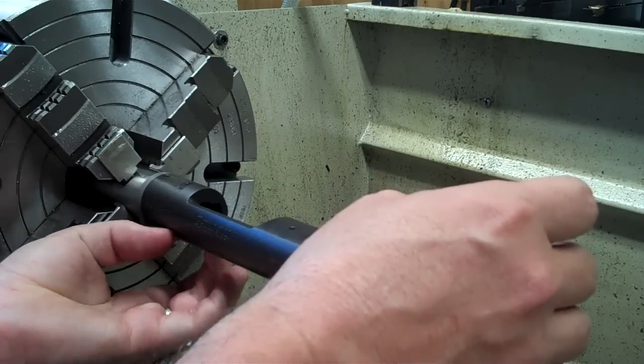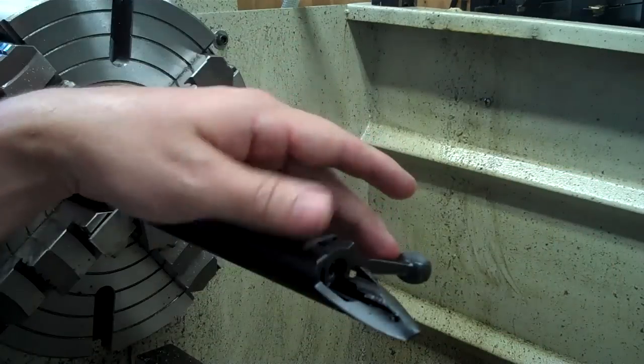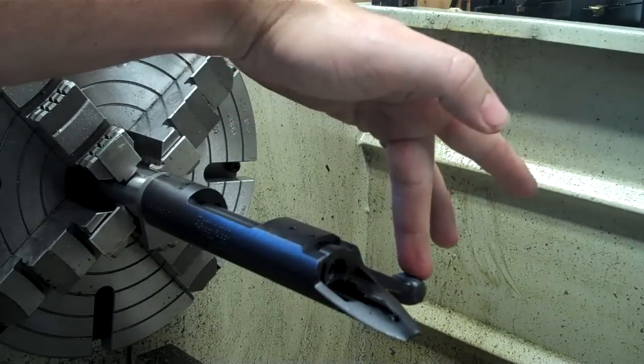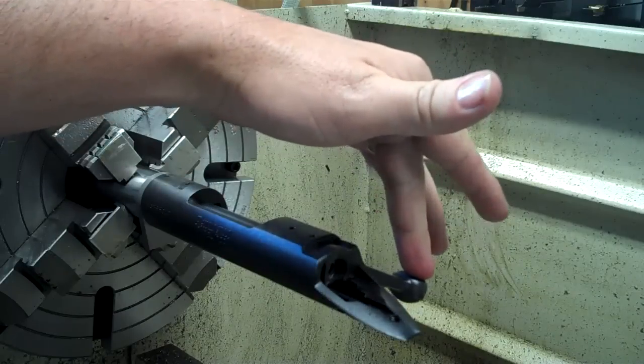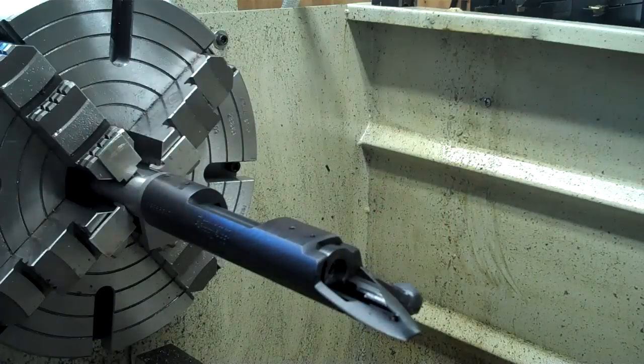So we put the gauge in there, go to close the bolt. See we have resistance on the bolt closing. I have to push it down with my hand.